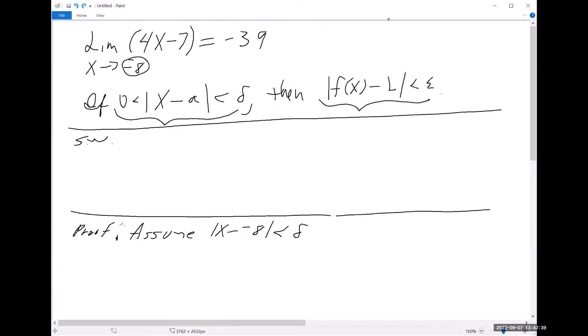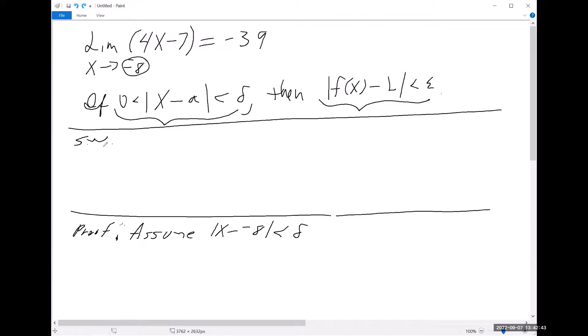So what we'll do over here is we're going to say, okay, we want to be able to show that f of x minus the L, which in this case is minus 39, is less than epsilon. And so we want to arrive at the delta that's going to allow us to say that. And so at this point, we sort of just play with some algebra. And we say, if I clean this up, and then factor out a four.